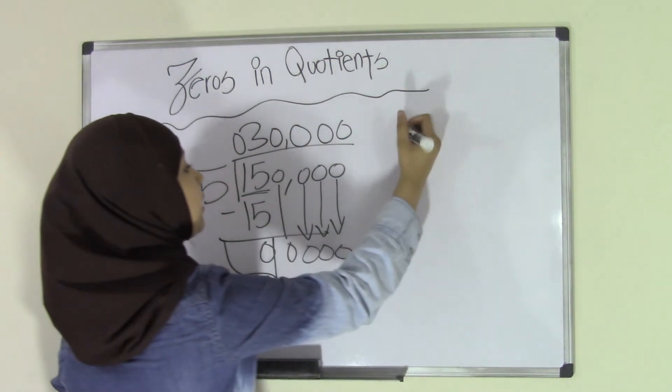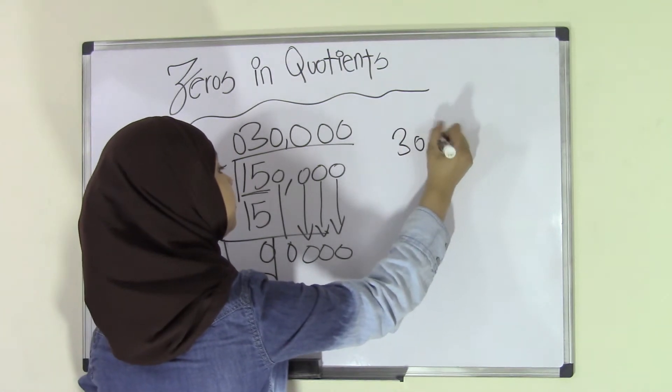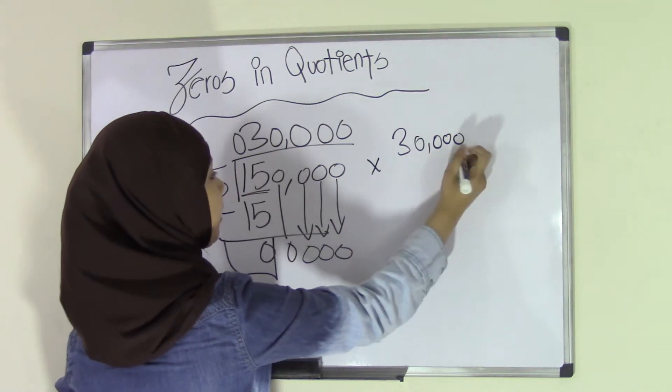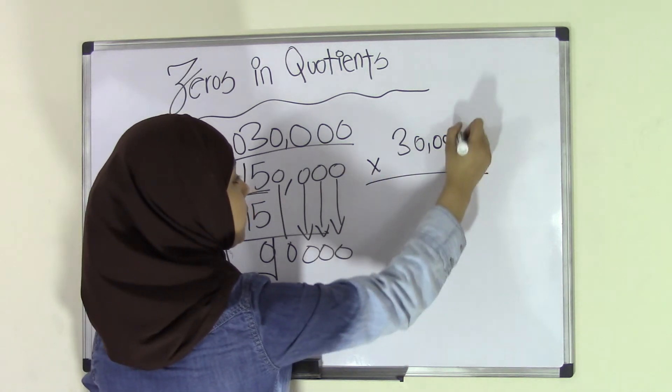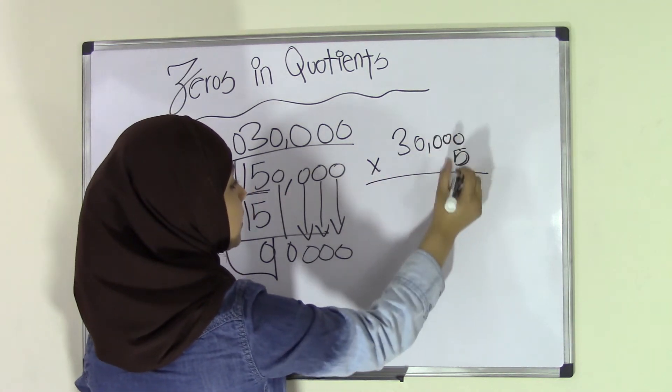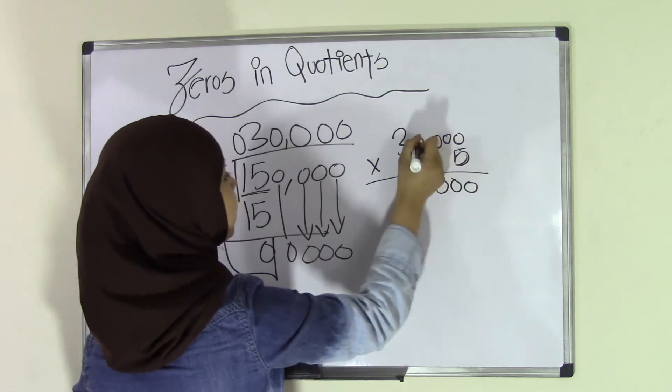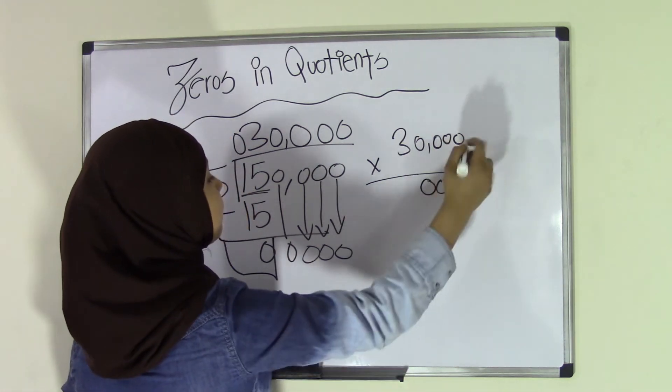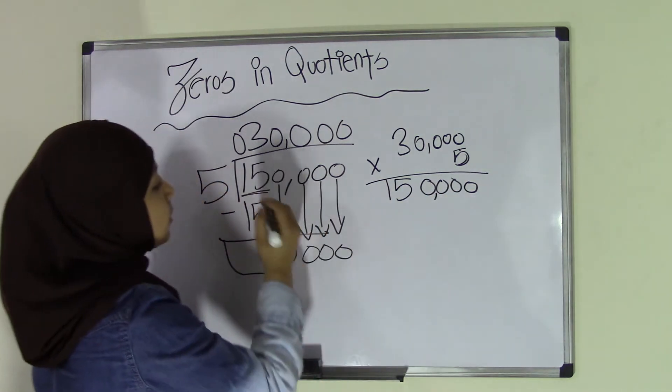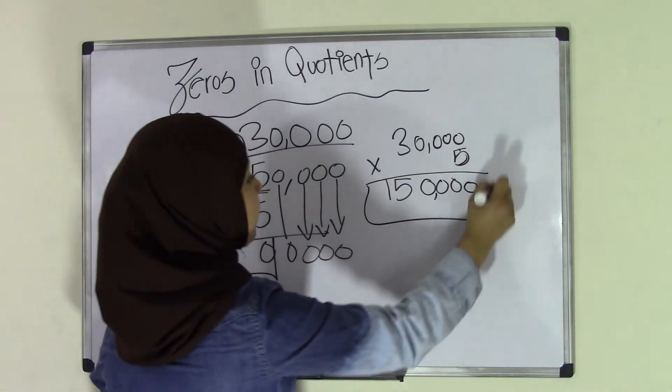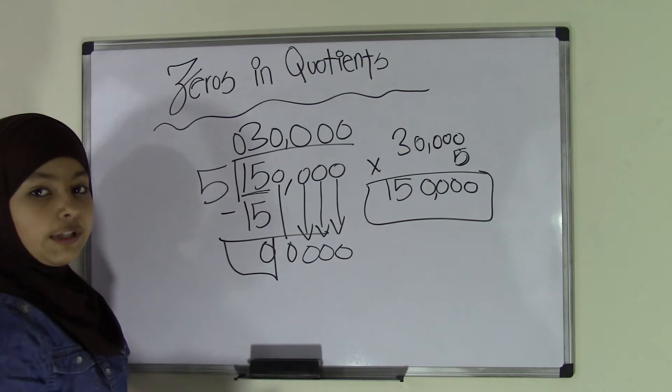We're going to check it. We're just going to go back here, and we're going to do 30,000 times 5. 5 times 0 is 0, 5 times 0 once again is 0, and then again 0, and then 0. So we have 4 0s, and 5 times 3 is 15. So we get 150,000 and 150,000. So that means they match up. So that was really easy, right?